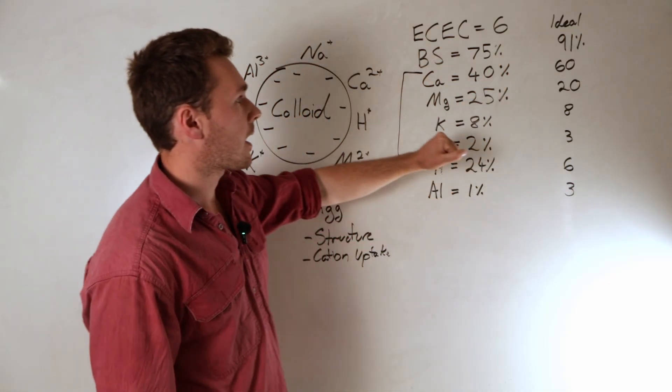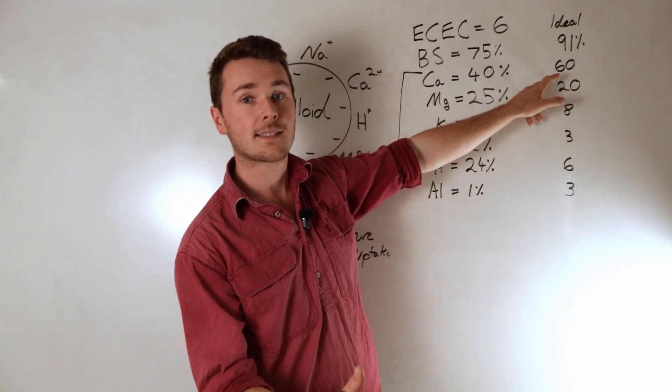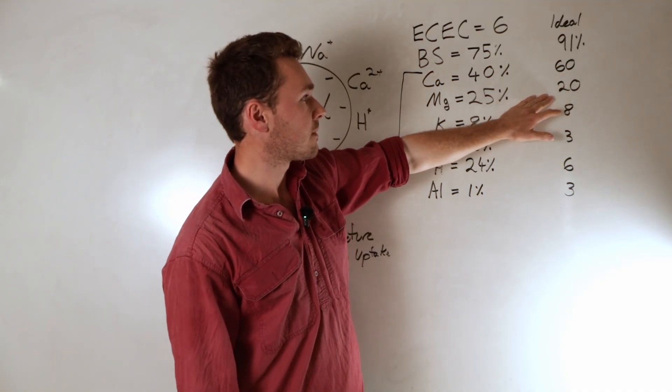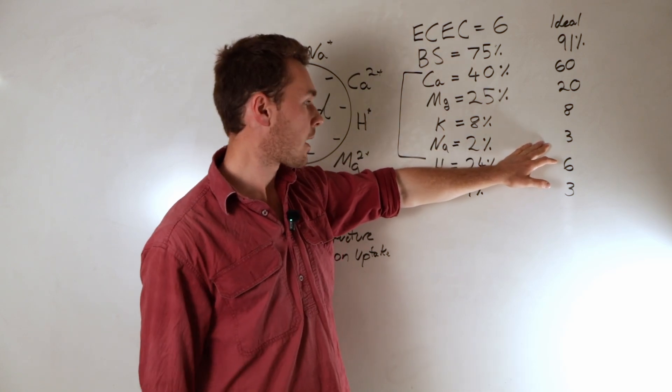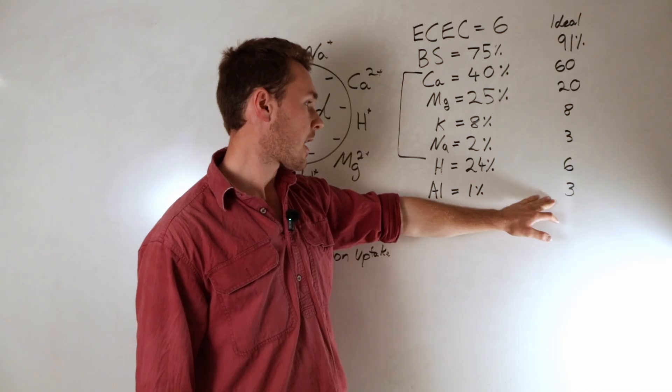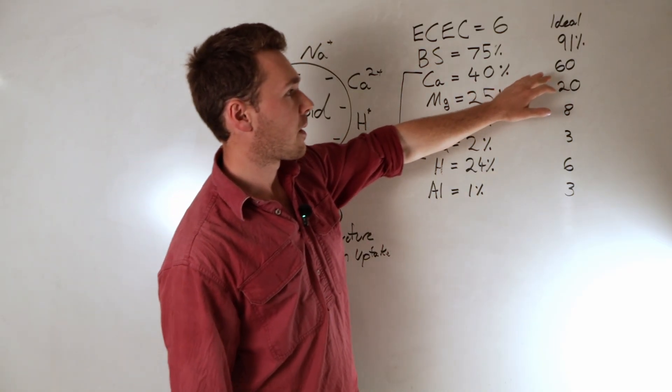This is a sandy soil, by the way, which means the ideal ratio or ideal percent of calcium in our soil is about 60. Magnesium is 20. Potassium 8. Sodium less than 3, it doesn't really matter. Hydrogen we want it around that 6. Aluminum less than 3. So you can see here calcium sitting at 40%, ideally want it at 60.